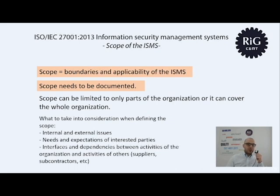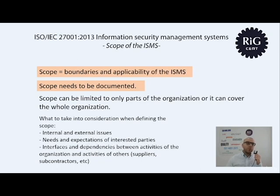The third requirement in this chapter is the scope of the information security management system. Once you have decided to implement an ISMS as per ISO 27001, before you begin the actual implementation you have to define the scope — meaning the boundaries and the applicability of the system. You need to document it; you need to have it written. The scope means: where do you plan to implement this system? You can choose a part of your organization, or it can cover the whole organization, all its locations and activities.